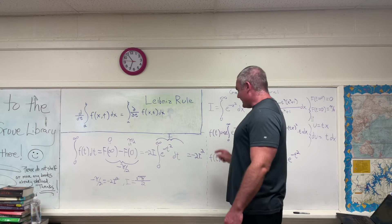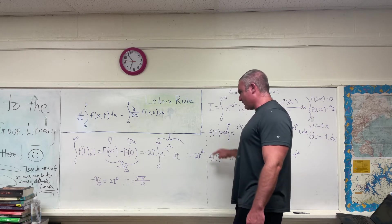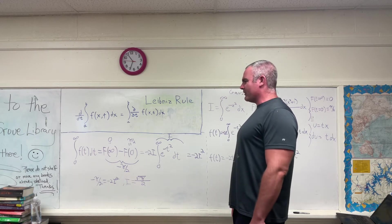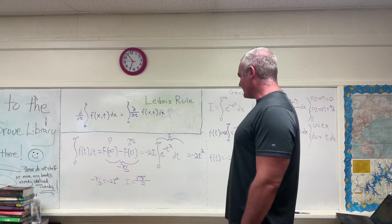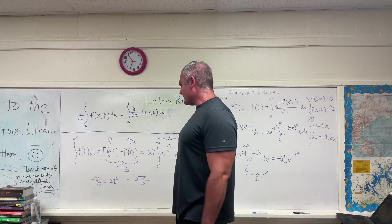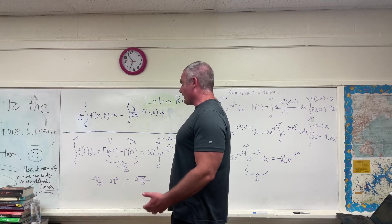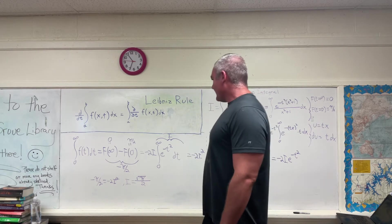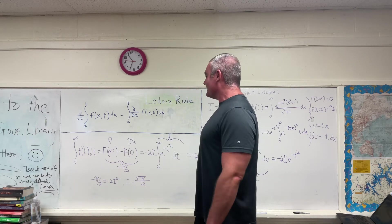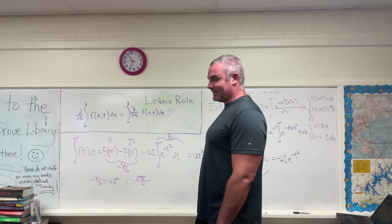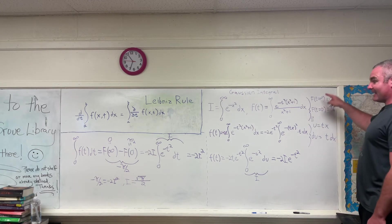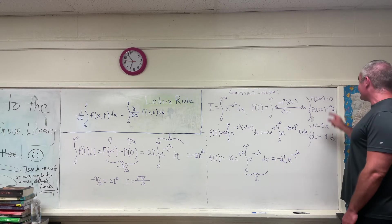The integral from zero to infinity of f of T DT is equal to — using the Fundamental Theorem of Calculus — big F evaluated at infinity minus big F evaluated at zero. Luckily, we already know what that is. We already know that big F evaluated at infinity equals zero, and big F evaluated at zero equals pi over two. So the integral from zero to infinity of our f of T DT is equal to negative pi over two.